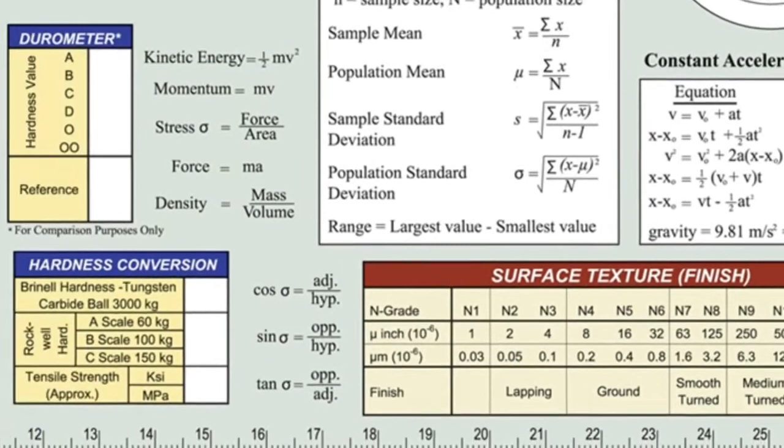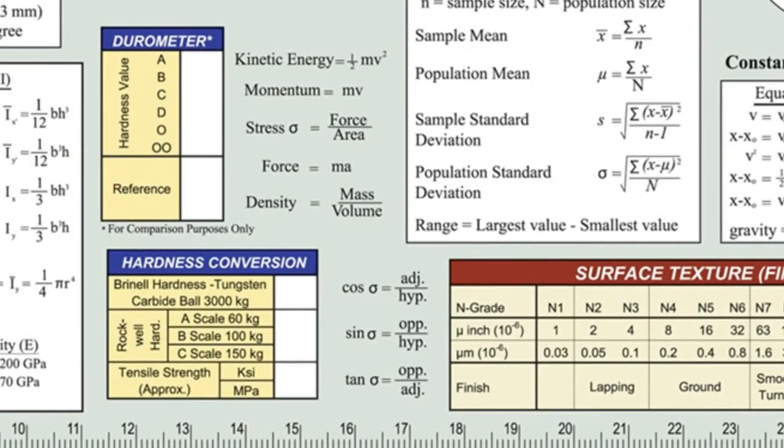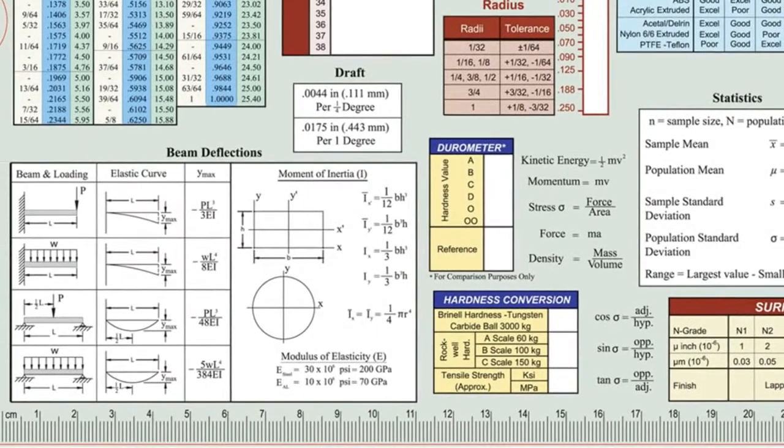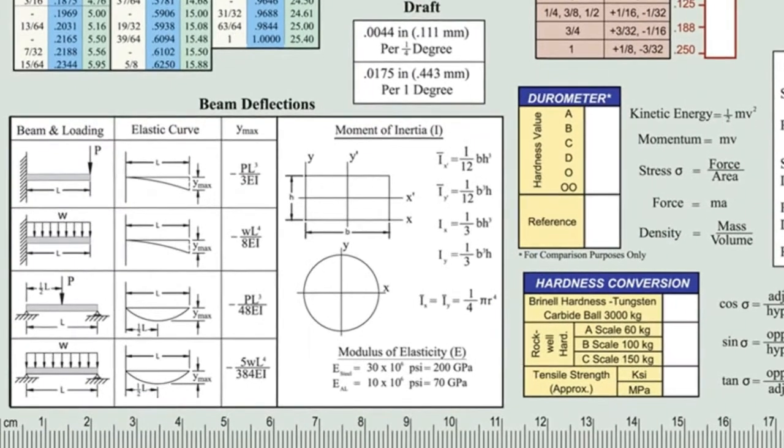Formulas for kinetic energy, momentum, stress, force, density, as well as sine, cosine, and tangent are just to the left of those in the middle of the chart. The beam deflections table includes beam loading diagrams and formulas for maximum deflection and moment of inertia.